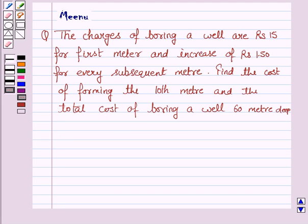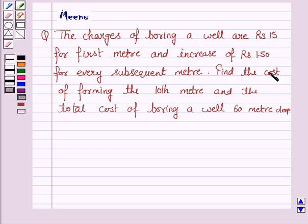Hello friends, let's work out the following problem. The charges of boring a well are rupees 15 for the first meter and increase of rupees 1.50 for every subsequent meter. Find the cost of forming the 10th meter and the total cost of boring a well 60 meters deep.